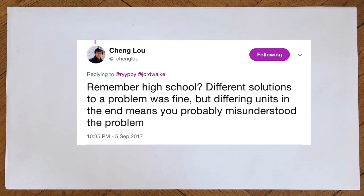If you have 20 columns, then it's probably too verbose to write as a tuple. You can combine both worlds: write an interface that exposes the board as a tuple system to the user so they cannot mess with your API, and inside your library convert it to a list and do your processing there. There's a nice tweet by Cheng Lou: 'Remember high school — different solutions to a problem were fine, but differing units in the end means you probably misunderstood the problem.' This applies a lot to programming — type systems are always talking about this.